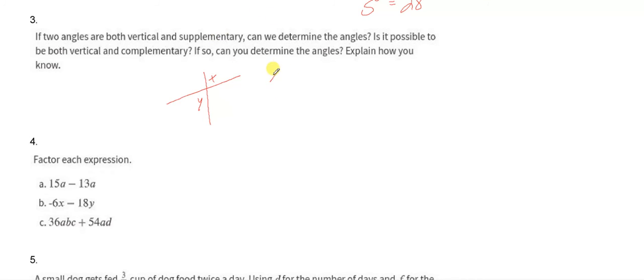We could say that X and Y are supplementary if, well they both have to be equivalent and add up to 90. I'm sorry 180. So that means that they both have to be 90 degrees.